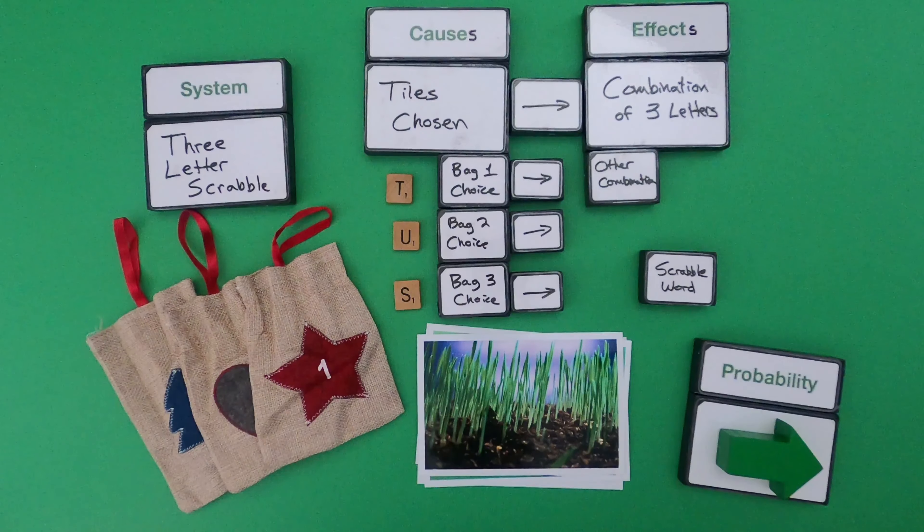I found that there are 125 total combinations. About 29 or 30% of the time you're going to choose a word that would be a Scrabble word — words like sit, sat, ran, and rat. But the majority of the time, 71% of the time, you're going to be choosing a word that's just another combination. A simple Punnett square in biology would be an example of a probability table.